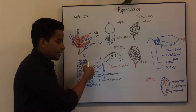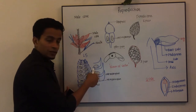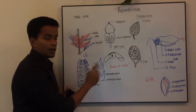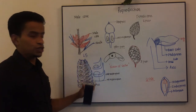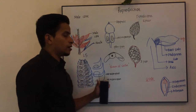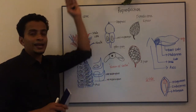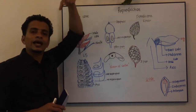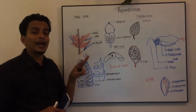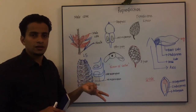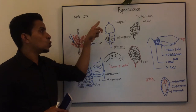This is the microsporophyll — the same leaf — which carries the microsporangia on its lower side. The male cone is nothing but the aggregated version of the microsporophyll.